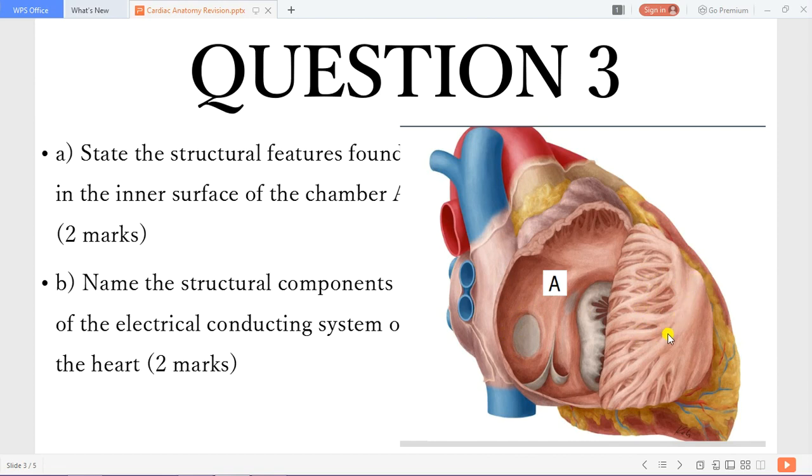And then here is what we call the crista terminalis. We have the smooth part of the right atrium and the rough part of the right atrium divided by the crista terminalis.